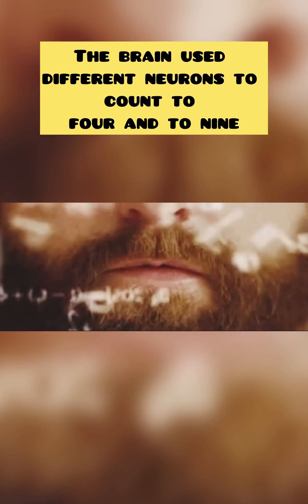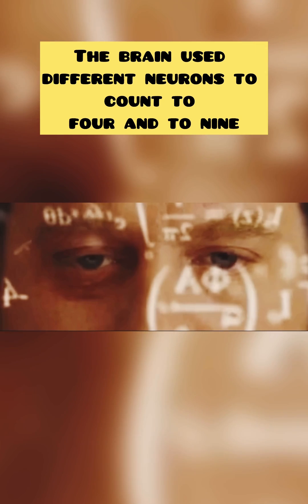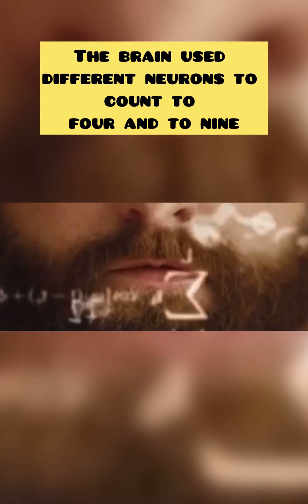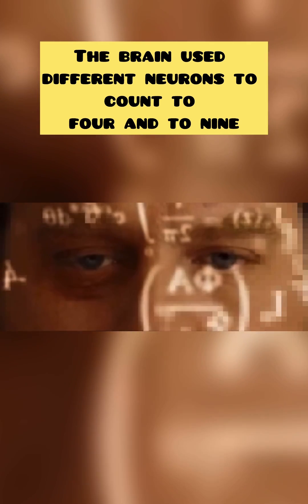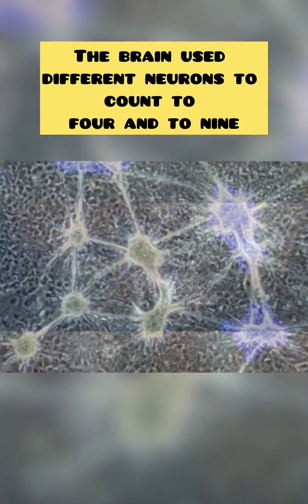The brain uses different neurons to count to 4 and to 9. The number until now and up to 9 is provided by different chains of neurons in the brain, research by German scientists has shown.